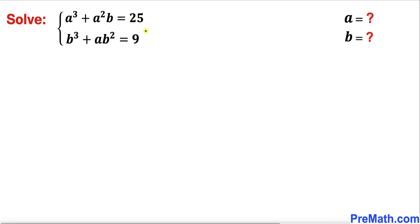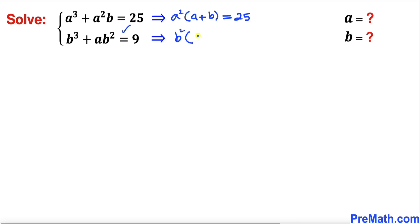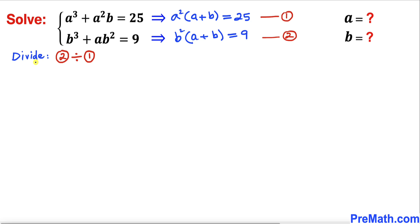Let's get started with the solution. Focusing on the first equation, a² is common on the left-hand side, so we factor out a² and get a²(a + b) = 25. Likewise for the second equation, b² is common, so we factor it out and get b²(a + b) = 9. Let's call these equation one and equation two.